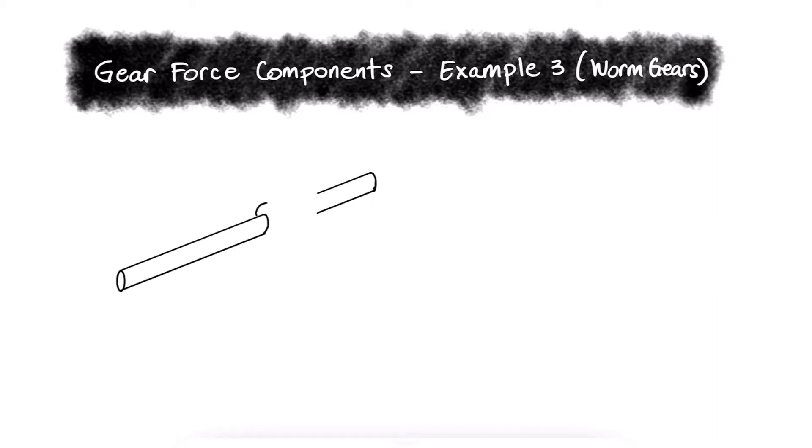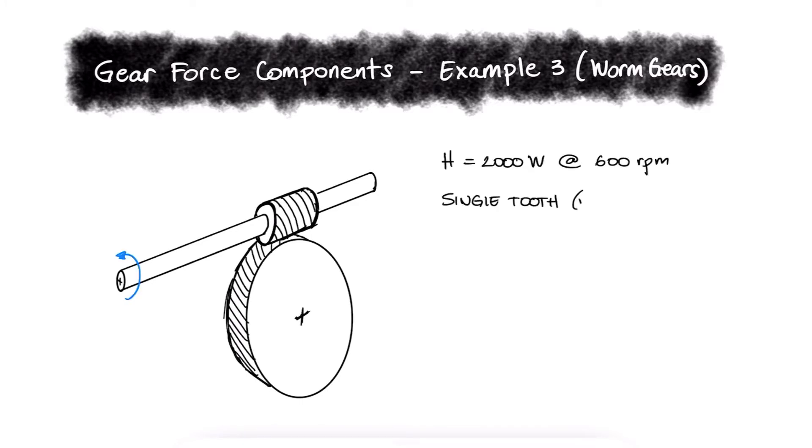A right-hand single-tooth worm has a catalog rating of 2000 watts at 600 revs per minute when meshed with a 48-tooth cast iron gear.